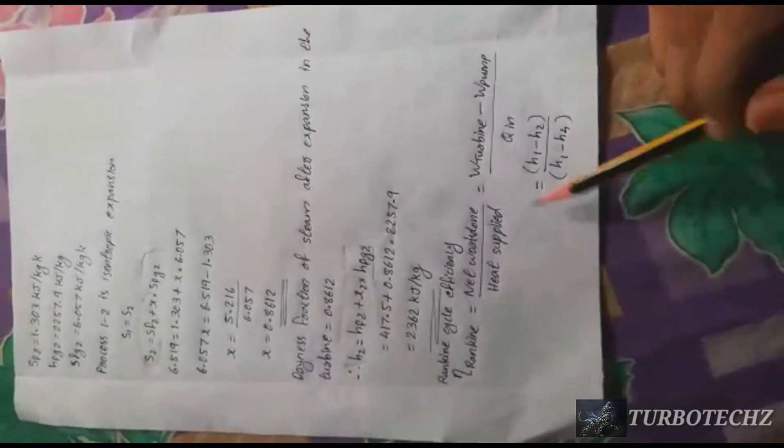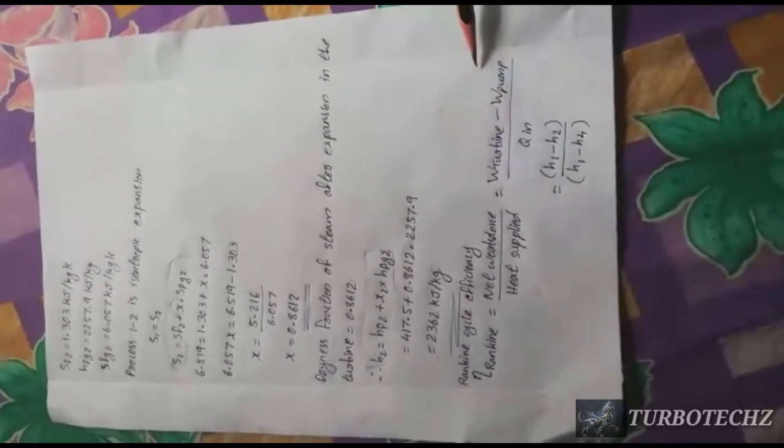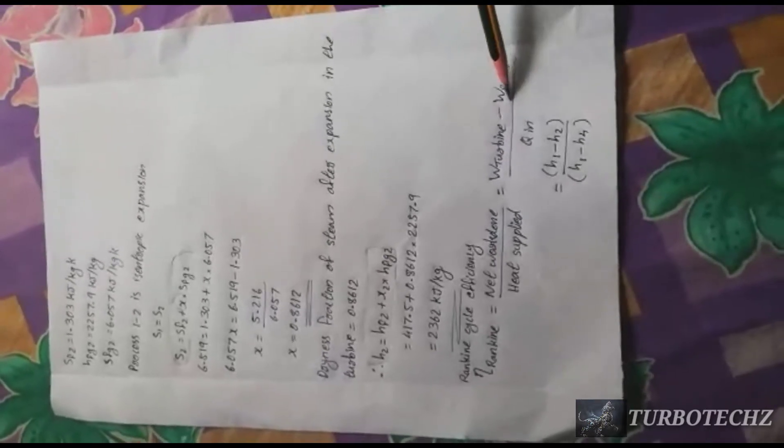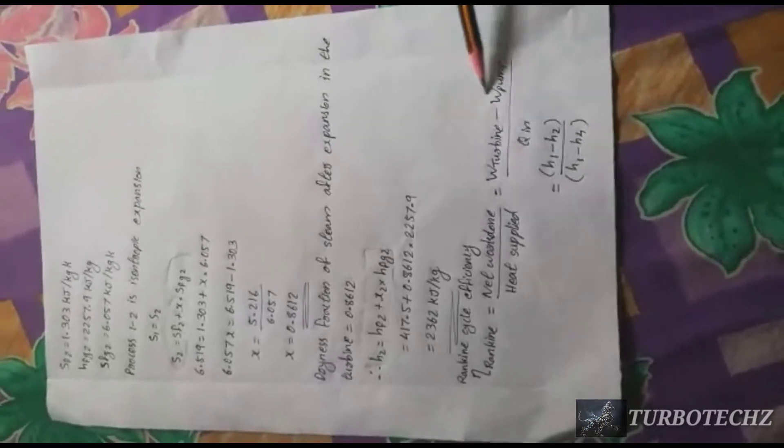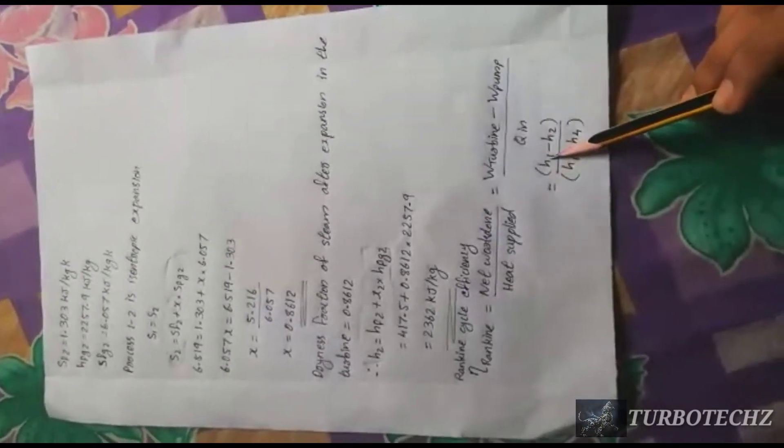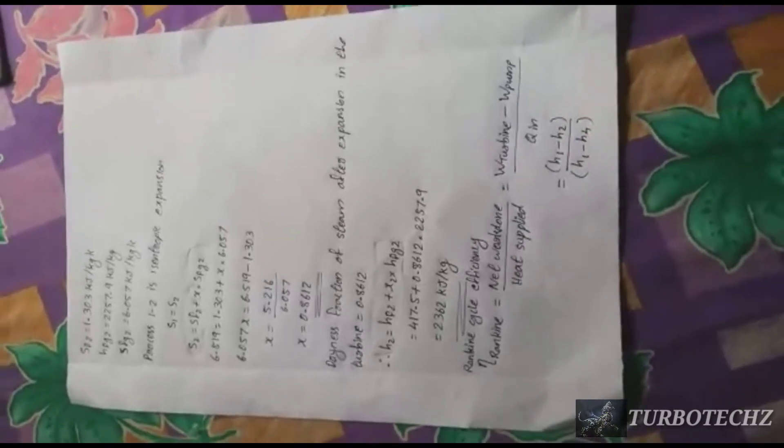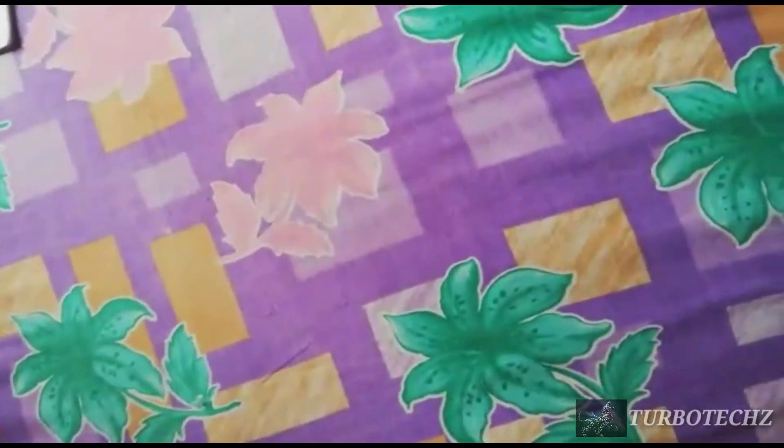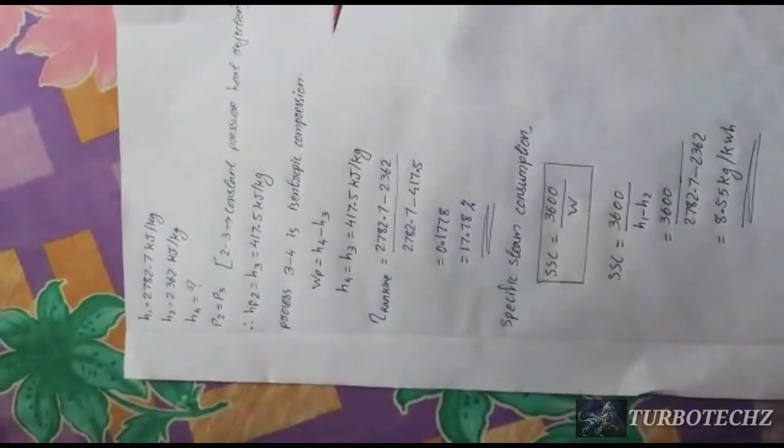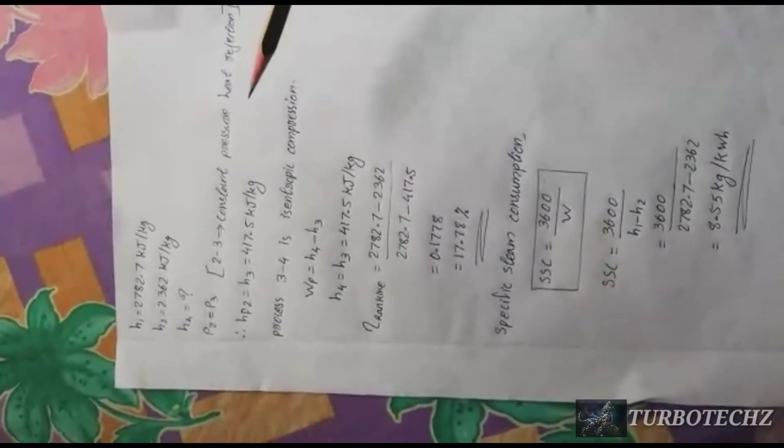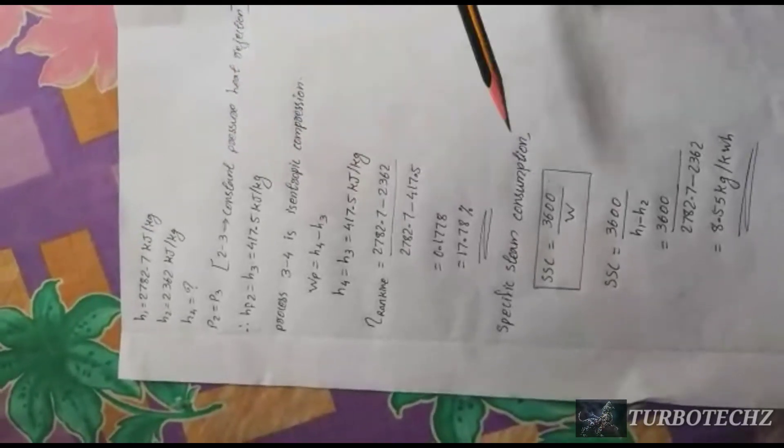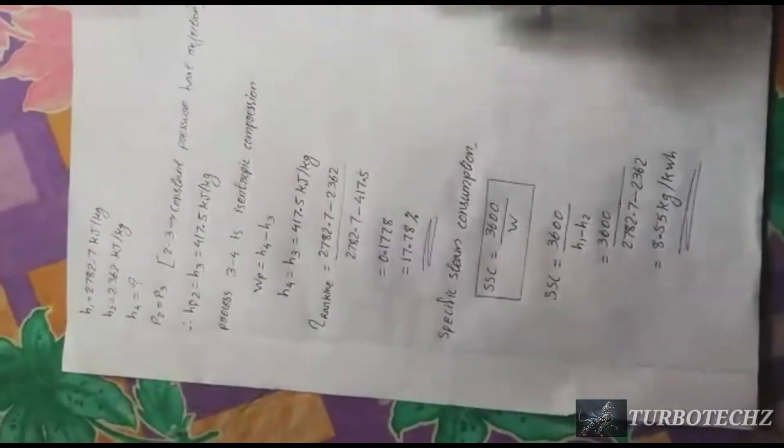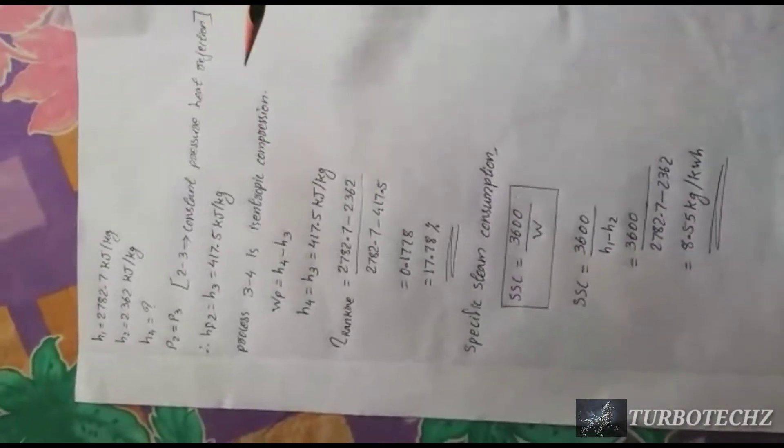This value is 1 bar condition. Now let's find another value. Turbine work. Turbine work is h1 minus h2. This is h1 and h2.